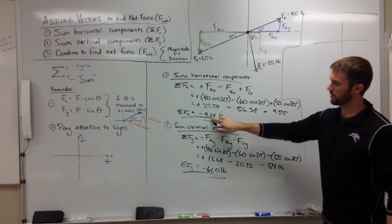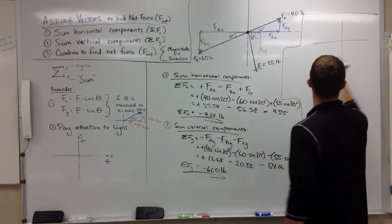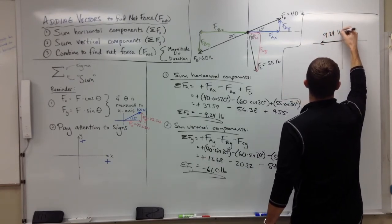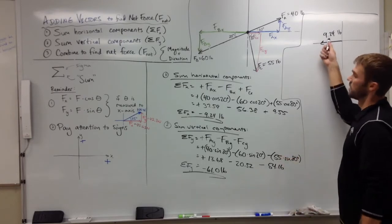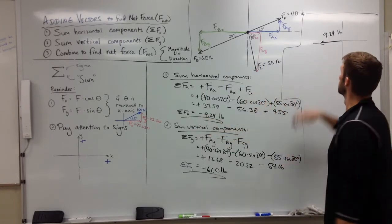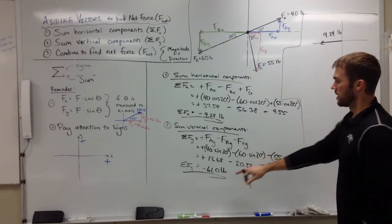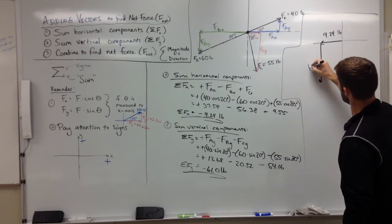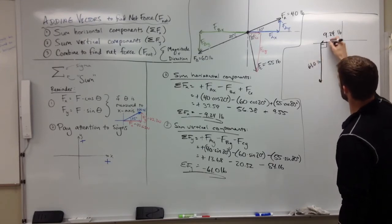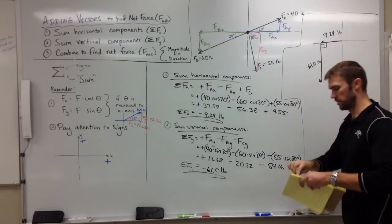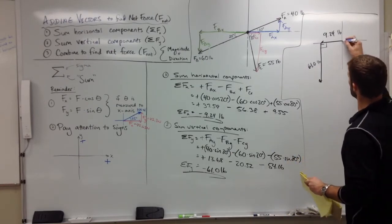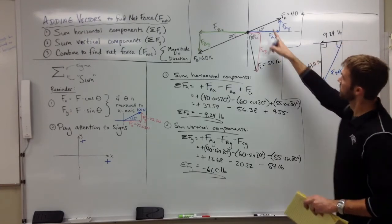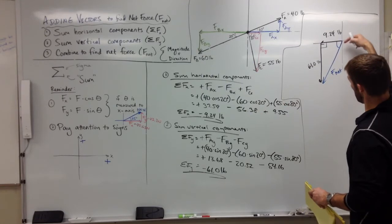So x component for our net force is 9.24 pounds to the left. Notice I'm just putting the magnitude here - the negative again just indicates the direction. 9.24 pounds that way, and then 61 pounds downward. So our net force, the one force that could replace FA, FB, and FC and have the same effect, is this F net at some angle theta from the x axis. I'm just going to find what that is.